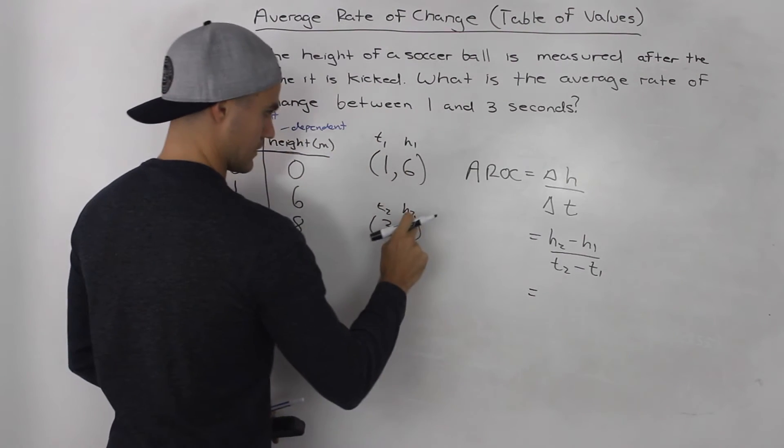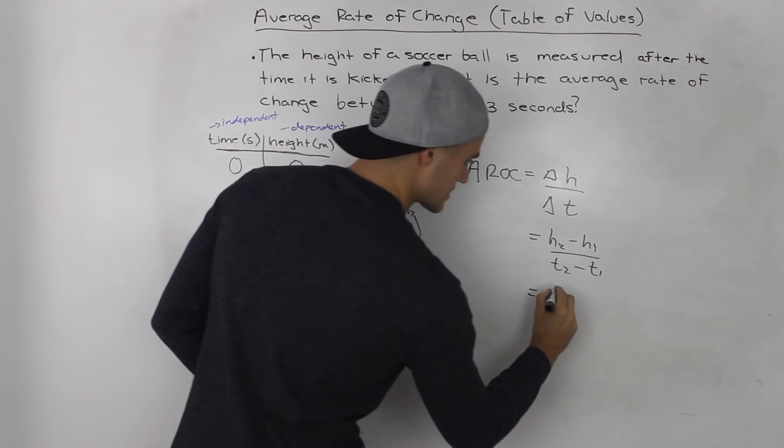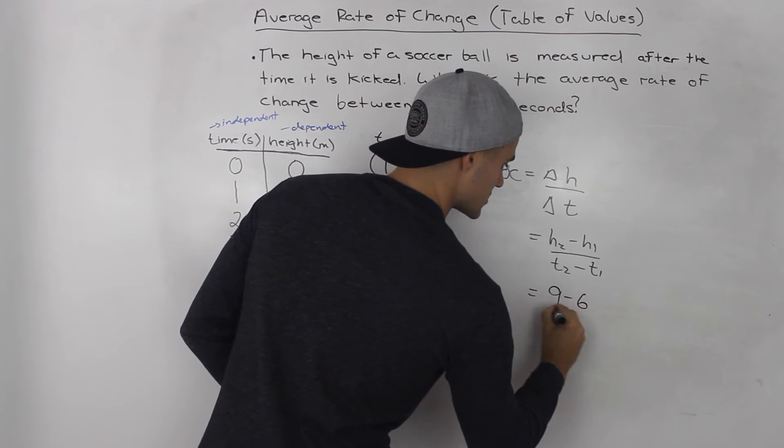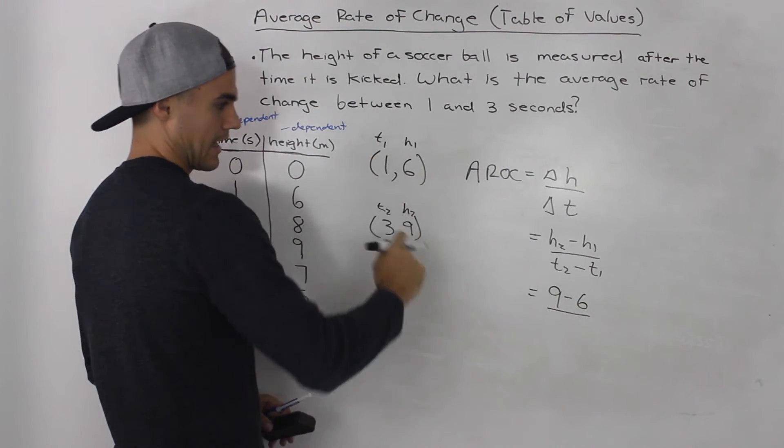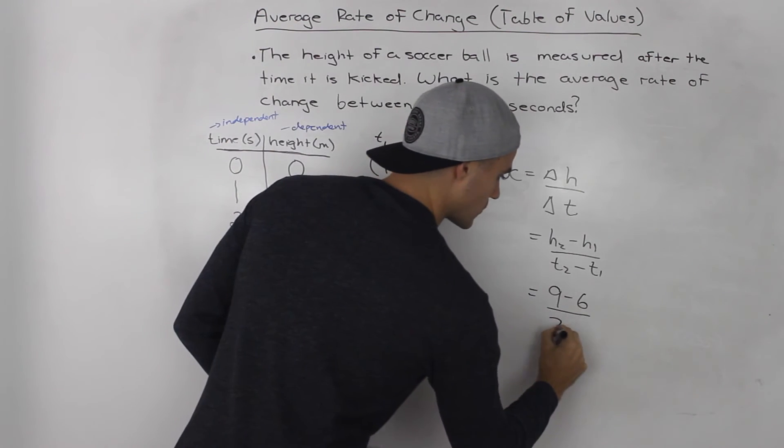We would have 9 minus 6, which is the change in the dependent variable, the change in the height, over the change in the time, which would be 3 minus 1.